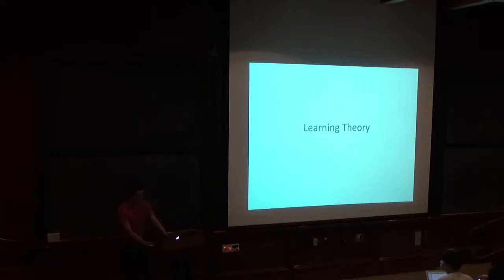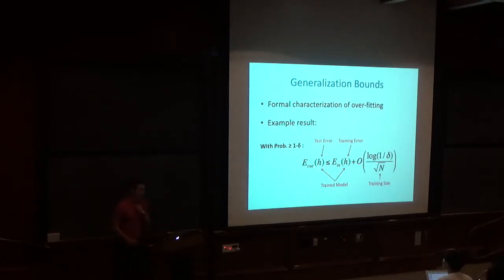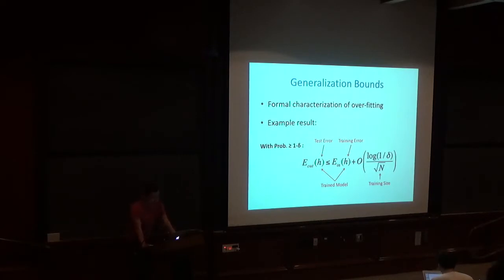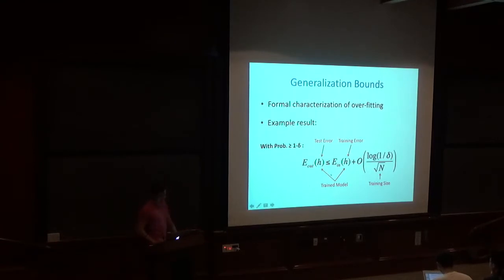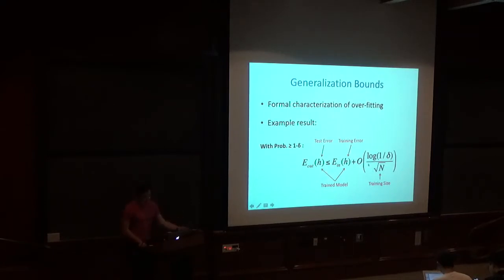Topic one: learning theory. Learning theory is concerned with generalization bounds — it tries to establish a formal characterization of overfitting. A typical guarantee we'd like to see is that with probability one minus delta, where delta is some error tolerance like 0.01, the expected out-of-sample test error is no greater than the training error plus a generalization bound term. This term is on the order of log of one over one minus delta divided by the square root of the training size, assuming the training set is sampled IID from the test distribution.